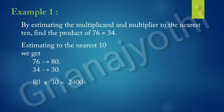First, estimating to the nearest 10. If we estimate to the nearest 10, we will get 76 is estimated to 80, 34 is estimated to 30. So, 80 into 30 is 2,400.